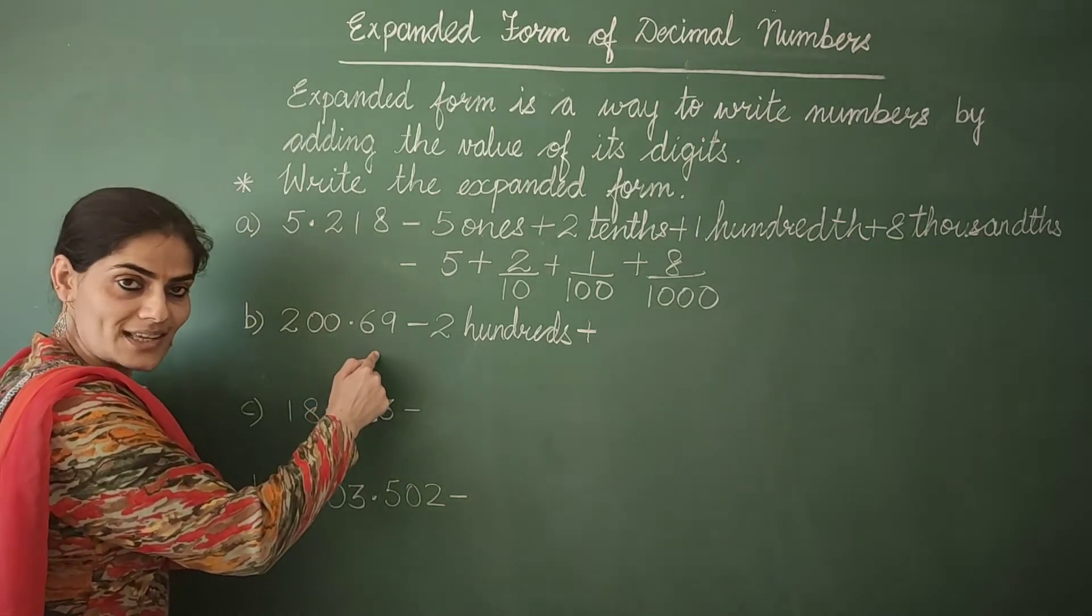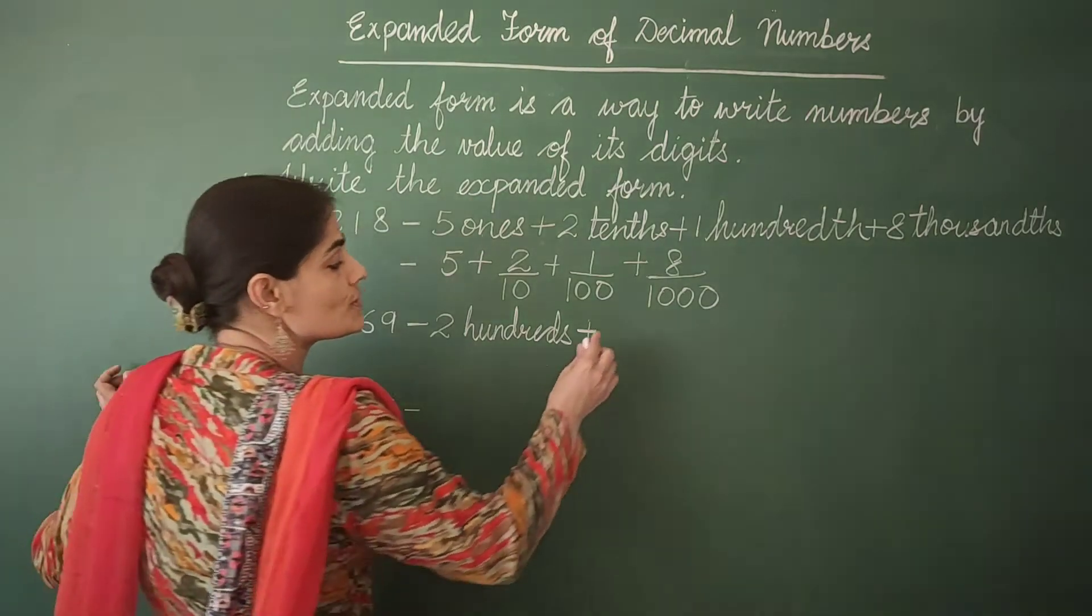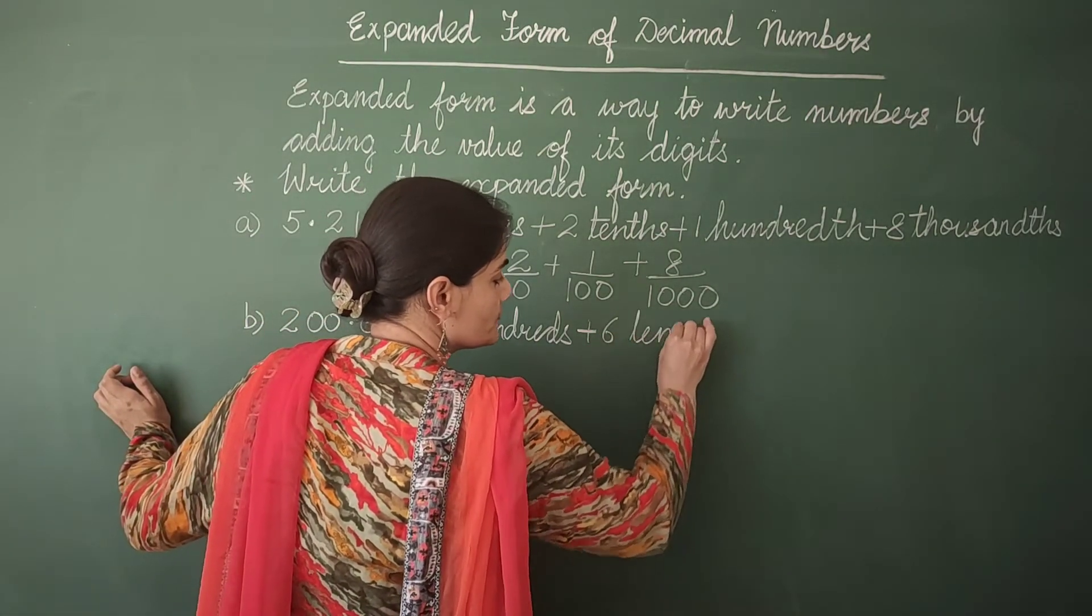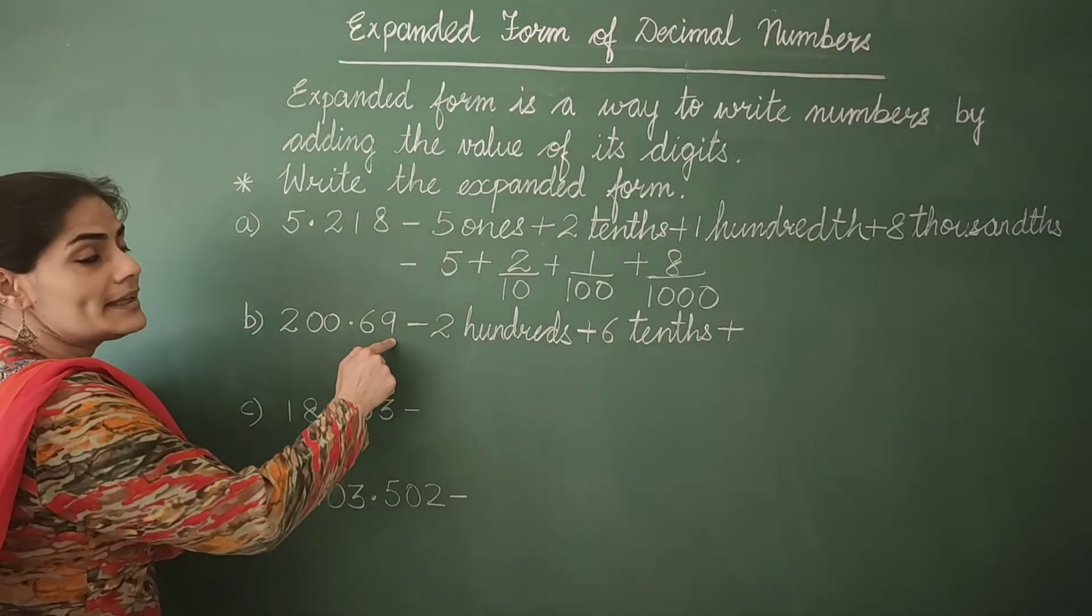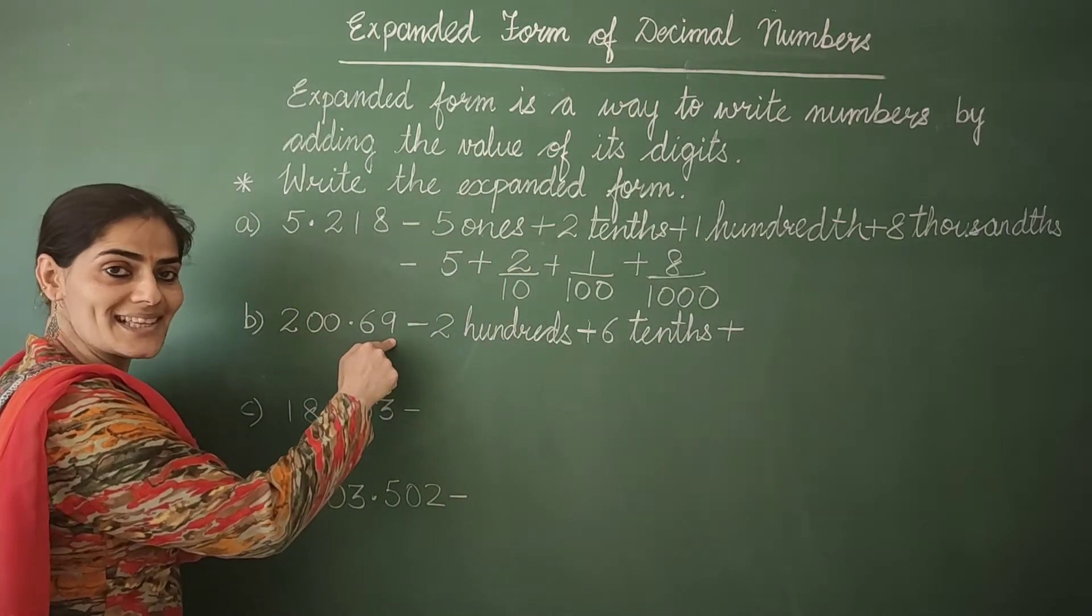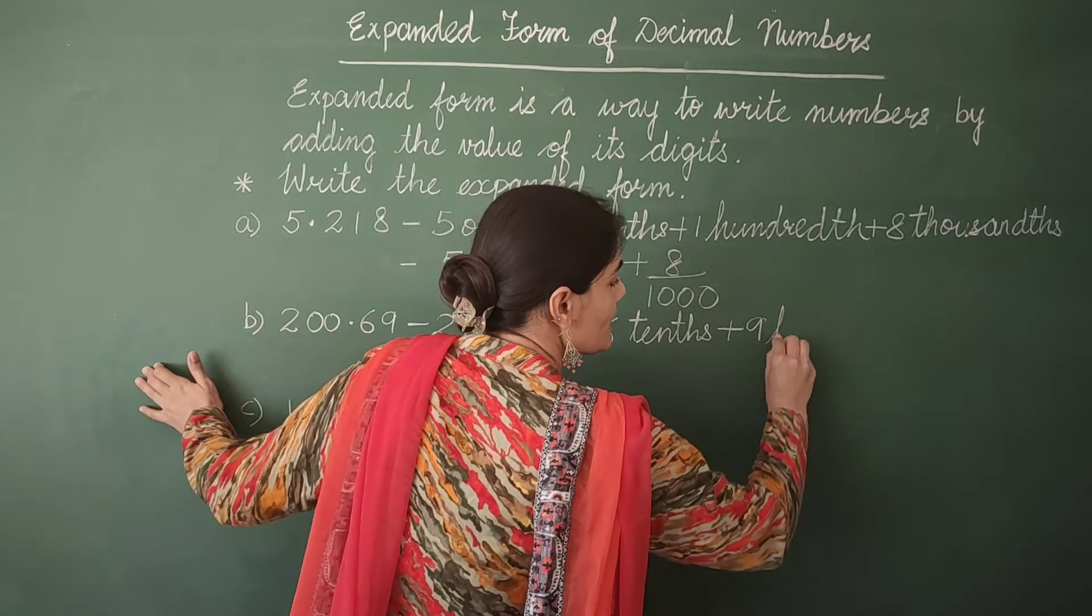The first digit is 6 and it is at tenths place. So 6 tenths plus this is 9. 9 is at hundredths place. So 9 hundredths.